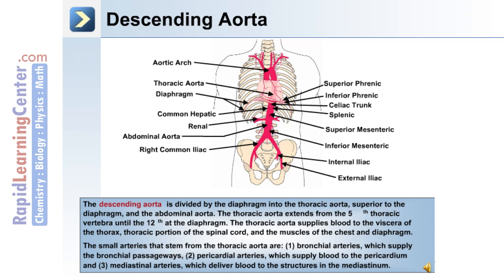The descending aorta is divided by the diaphragm into the thoracic aorta, superior to the diaphragm, and the abdominal aorta. The thoracic aorta extends from the fifth thoracic vertebra until the 12th at the diaphragm. The thoracic aorta supplies blood to the viscera of the thorax, the thoracic portion of the spinal cord, and the muscles of the chest and diaphragm. Small arteries that stem from the thoracic aorta include the bronchial arteries, which supply the bronchial passageways; the pericardial arteries, which supply blood to the pericardium; and the mediastinal arteries, which deliver blood to the structures in the mediastinum.